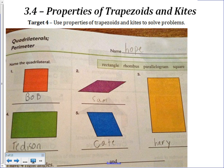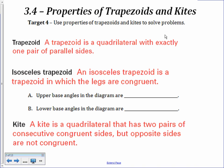Hi everybody, Mrs. Lucas here to talk to you about trapezoids and kites. We are on Unit 3 Target 4, and we're going to identify and use properties of trapezoids and kites to solve problems. I thought we'd start with this funny picture I found — a young student was naming her quadrilaterals with names she wanted to pick rather than rectangle, rhombus, parallelogram, and square. When we are naming and classifying quadrilaterals today, we want to use their formal names, and today we are going to focus on trapezoids and kites.